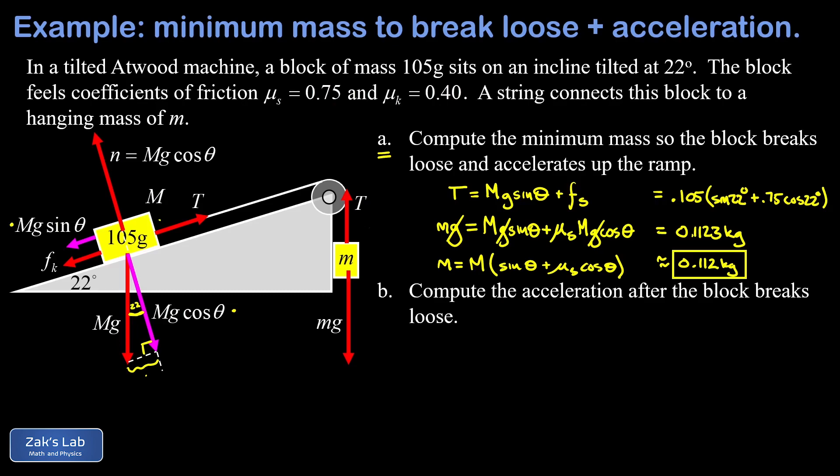So we know the 105 gram block is going to accelerate up the ramp, and the hanging mass is going to accelerate downward. We're going to call the actual direction of acceleration the positive direction. Now, the reason we did that is because it guarantees our acceleration is going to be a positive number in each of these cases. In other words, we have a consistent definition for our unknown quantity, A.